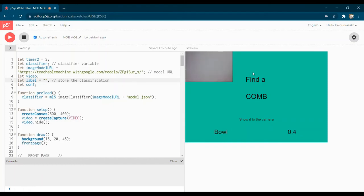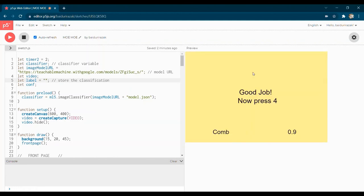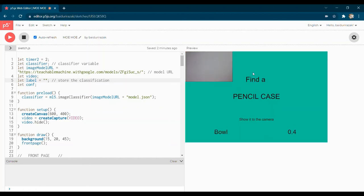To make sure that the user brings the correct item, the good job page will only appear if the label is equal to the current object and the confidence level must be more than or equal to 90%. If the program only depended on the confidence level, then even when the user didn't bring anything, the good job page might still appear.